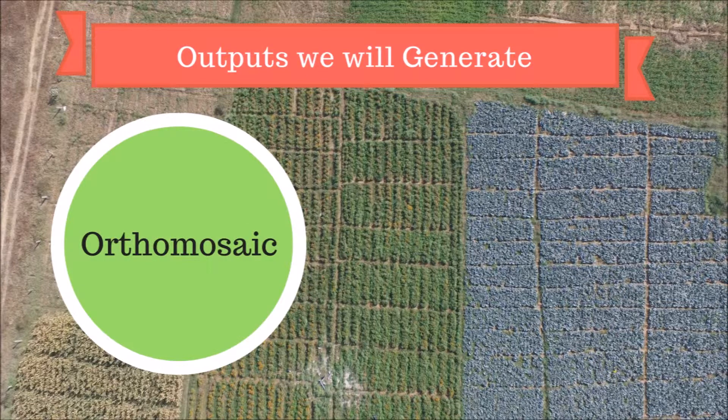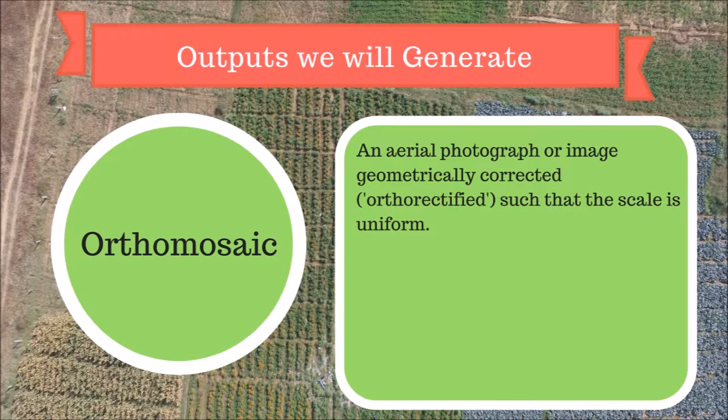First, the orthomosaic. An orthomosaic, orthophotograph or orthoimage is an aerial photograph or image geometrically corrected or orthorectified such that the scale is uniform — the photo does not have any distortion, just like a satellite map.